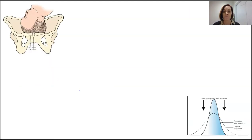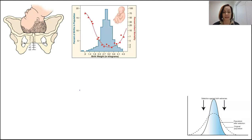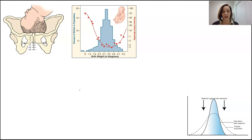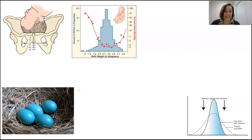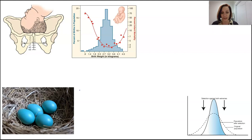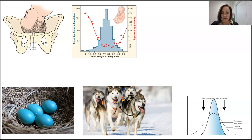Examples of stabilizing selection include baby weight — larger babies have difficulty fitting through the pelvic bones, while smaller babies risk losing body heat and have high mortality rates, so humans have evolved a smaller range of birth weight. Many robins lay exactly four eggs — the ideal number to maximise offspring while still managing to feed them. Siberian huskies have developed leg muscles strong enough to pull sleds but not so heavy that they sink through the snow — a balance between strength and weight.